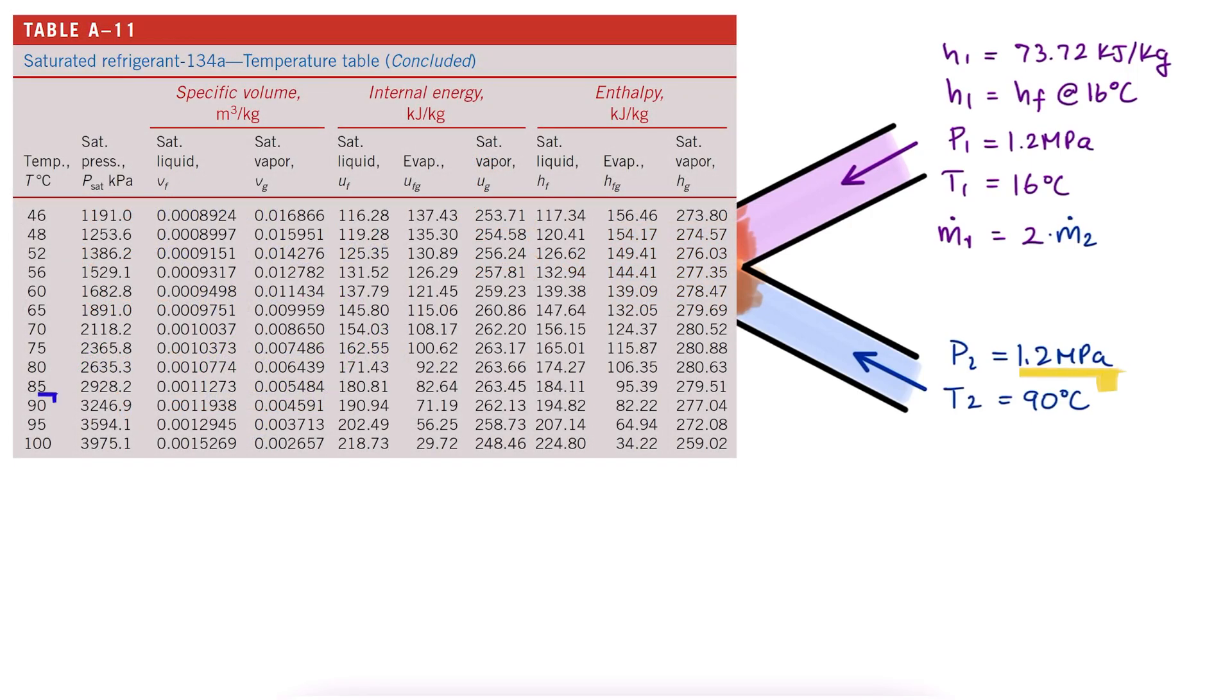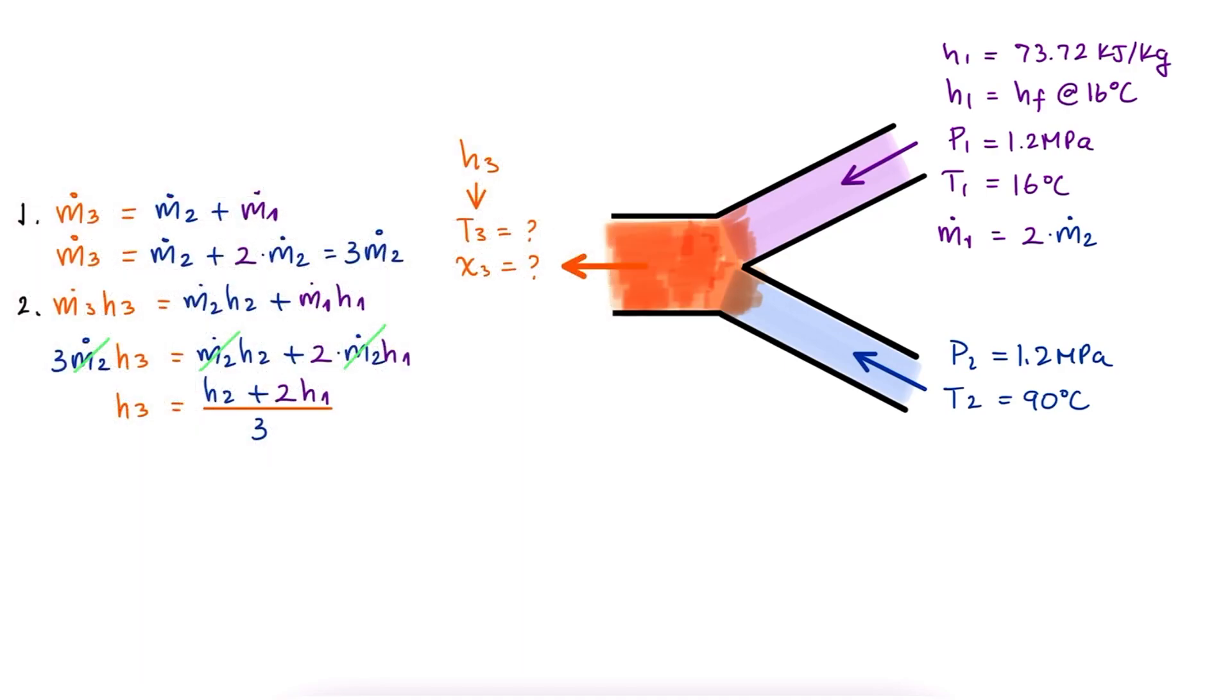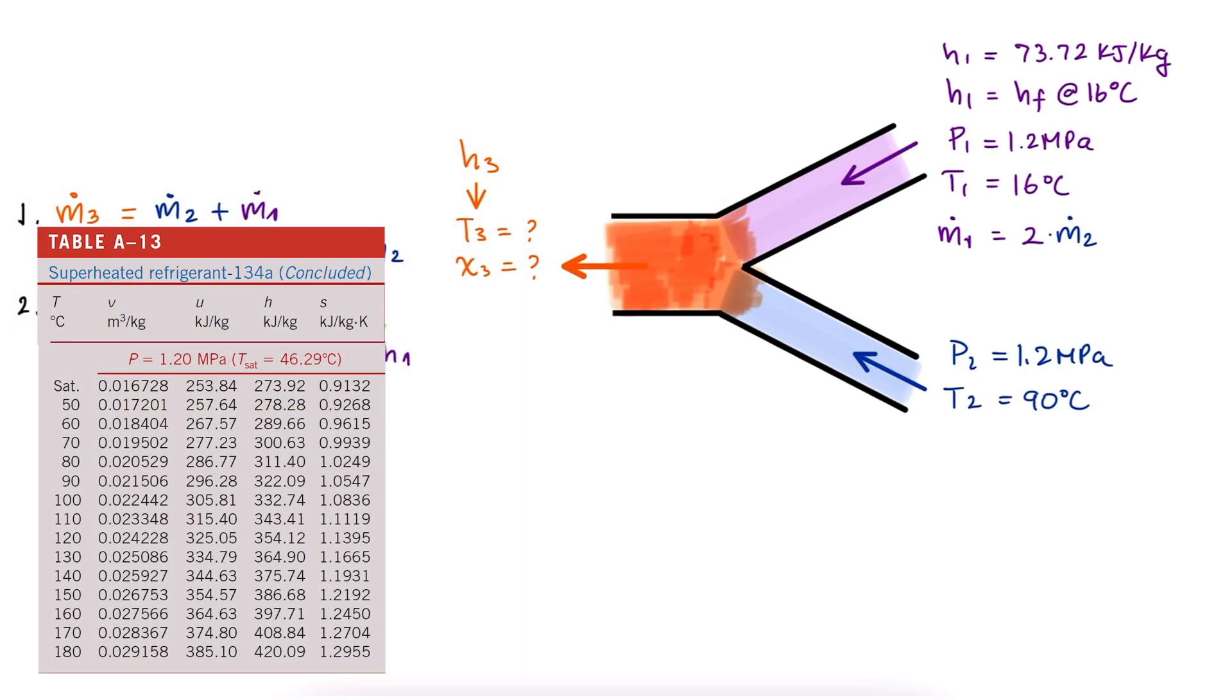For inlet 2, we see that for 90 degrees Celsius, the saturation pressure is over 3000 and since our pressure at 2 is 1.2 MPa, we can conclude that inlet 2 is at a superheated state. We go to our superheated tables, look up 1.2 MPa and 90 degrees Celsius and write down the specific enthalpy value for H2.